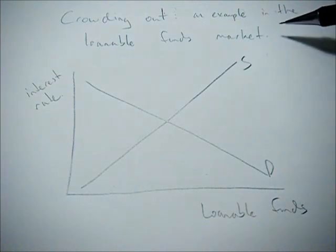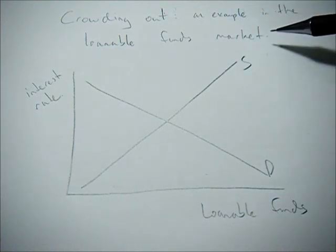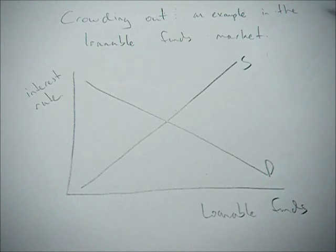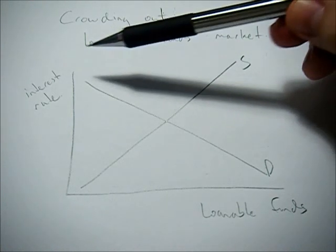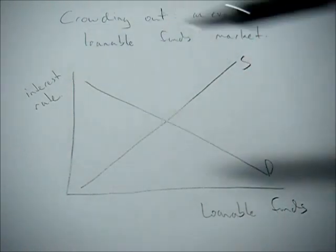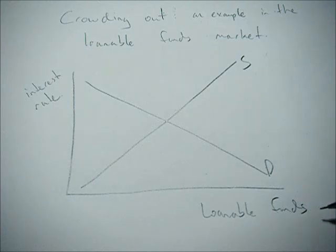This quick video is going to show us how crowding out affects the interest rate by using the loanable funds market. Here we have the interest rate on the y-axis, the loanable funds on the x-axis, and this is the market for loanable funds.